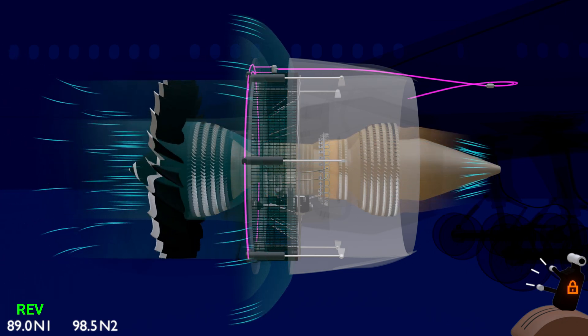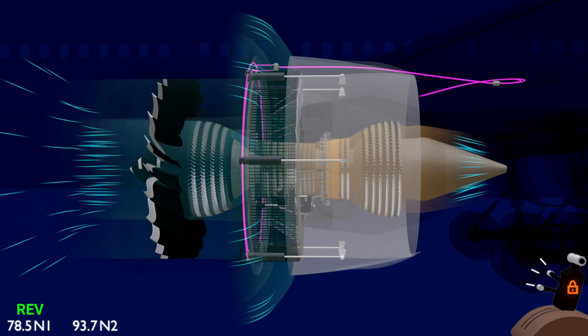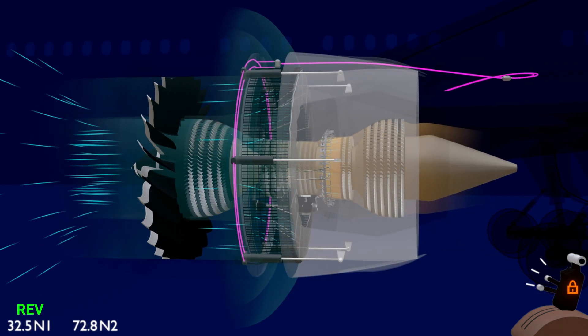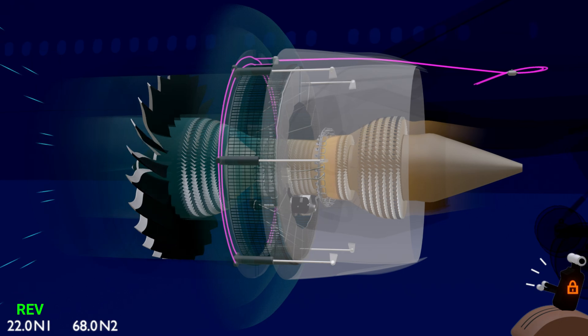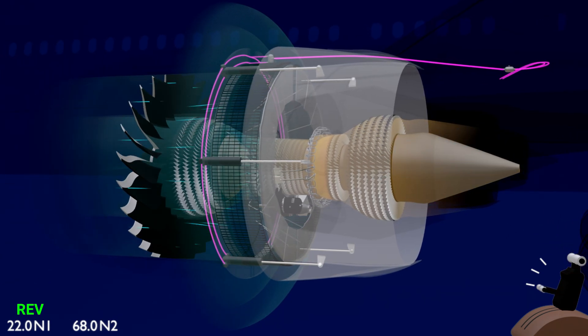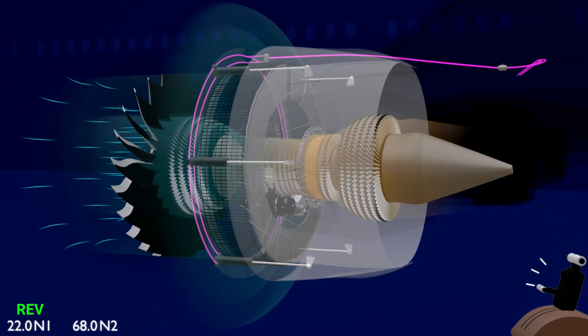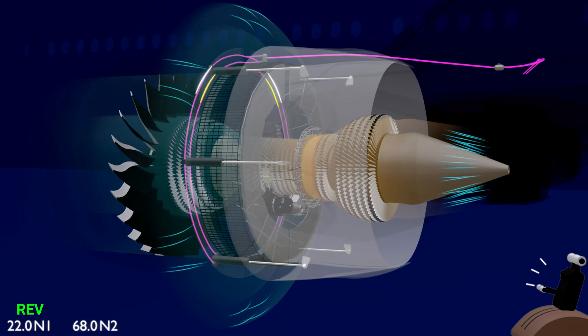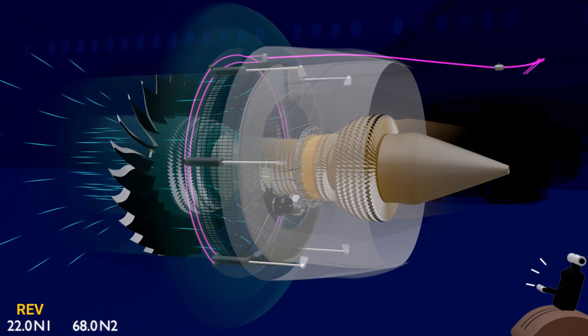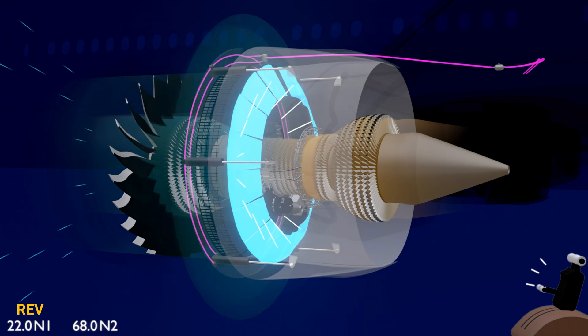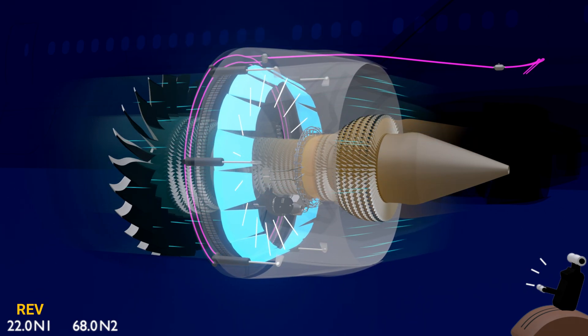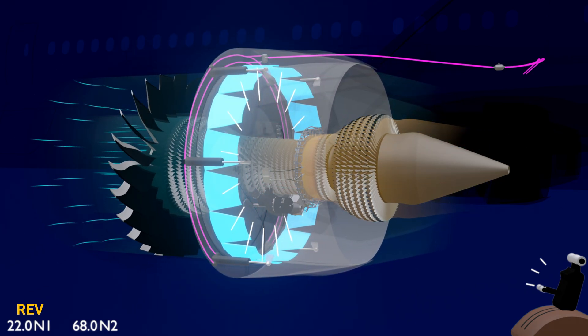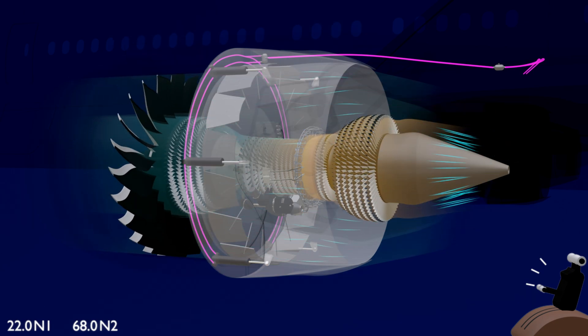To stow the reverser, the lever has to be moved to reverse idle. After the engine reaches the idle speed, to the stow position. The direction control valve changes the hydraulic pressure direction and retracts the actuators to move the reverser sleeve forward. The blocker doors open to allow the bypass air to flow through, and the engine switches back to producing the forward thrust.